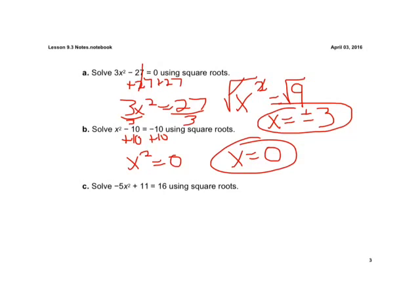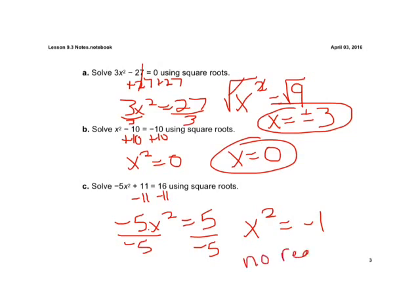Alright, and for part C, same thing here. We're going to do the opposite operation. So let's subtract our 11. So we're left with negative 5x squared equals 5. And we're multiplying here. So if we do the opposite operation and divide by our negative 5, we have x squared equals a negative 1. And remember what we said with negatives. We can't square any number and get a negative answer. So we know right away that this has no real solutions. So we have no real solutions there. Whenever that number is negative, we're going to have no real solutions.